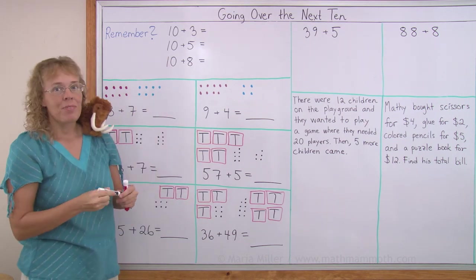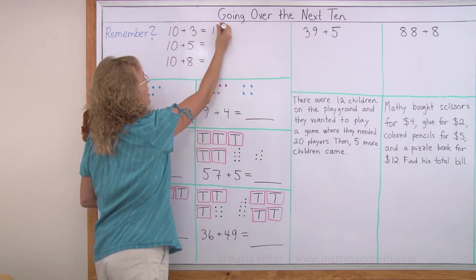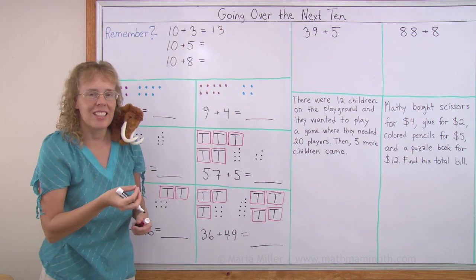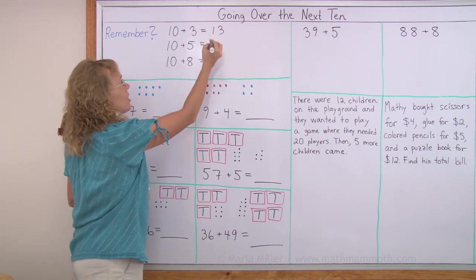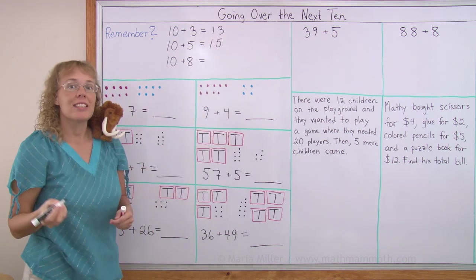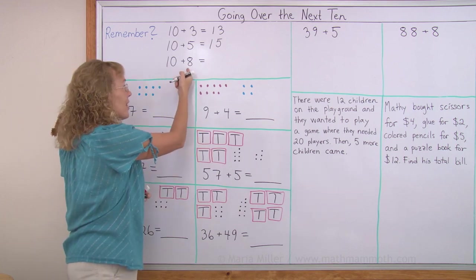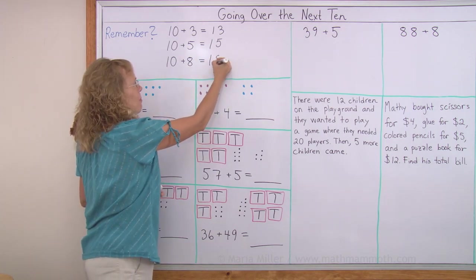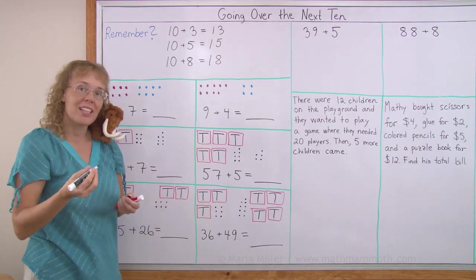10 plus 3? You see, when you have 1 ten and 3, your answer would be 1 ten and 3, right? But we say it as 13. It's one of the teen numbers. Over here, 10 and 5 is of course written as 1 ten and 5, but we say it as 15. It's one of the teen numbers. And here 10 and 8 makes 18. And the same with 10 and 9, 19.